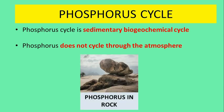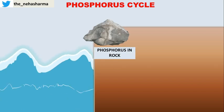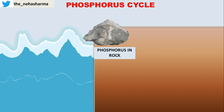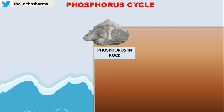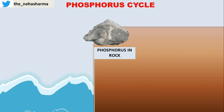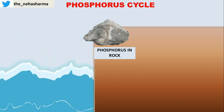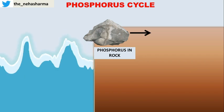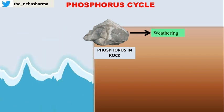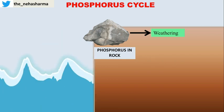The phosphorus cycle starts with rock — the major reservoir of phosphorus — which needs to be made available to all living organisms. The first step is disintegration of rock into simpler form, which is possible through the process known as weathering. In weathering, physical, chemical, or biological agents break rock into a simpler form.